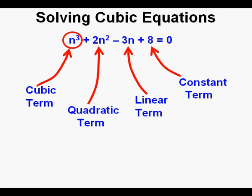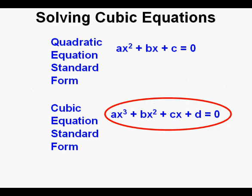In this equation, the cubic term is n³, the quadratic term is 2n², the linear term is -3n, and the constant term is 8. The standard form of a cubic equation is ax³ + bx² + cx + d = 0, and the standard form of a quadratic equation is shown above for comparison.